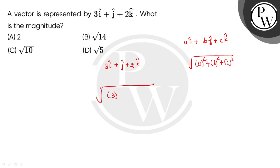Okay, so to find this magnitude, we will take the square root of 3 square plus 1 square plus 2 square. So here we have to find out 9 plus 1 plus 4, which equals root 14. So option B would be the correct choice. I hope you understand everything.